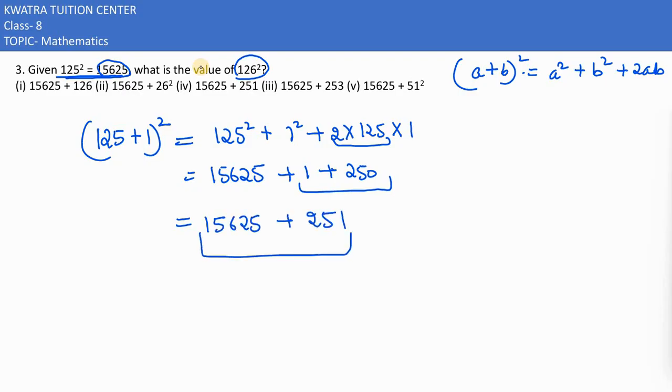This means in 15625, add 251, then only you would have 126 whole square. This is the value which is the fourth one out of the following.